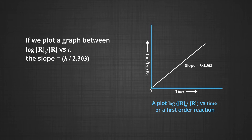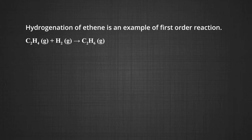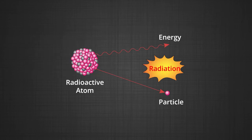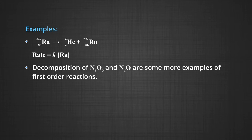This plot shows log(R₀/R) versus time for the first order reaction. Hydrogenation of ethene is an example: C₂H₄ + H₂ → C₂H₆ (ethane), and the rate = K[C₂H₄]. All natural and artificial radioactive decay of unstable nuclei takes place by first order kinetics — for example, radium changing into helium and radon: rate = K[Ra]. Decomposition of N₂O₅ and N₂O are further examples of first order reactions.